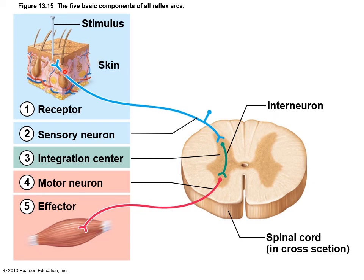In picture form: a nail in the skin sends an impulse via the sensory afferent neuron to the integration center in the gray matter of the spinal cord, where the interneuron is located. Then the motor efferent neuron carries the signal out to an effector — in this case, it will likely be a withdrawal reflex to contract the muscle and pull the limb away.